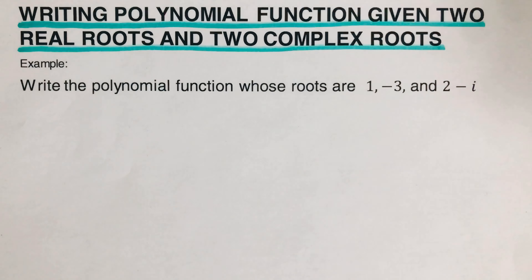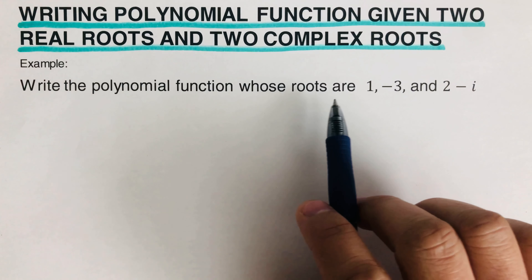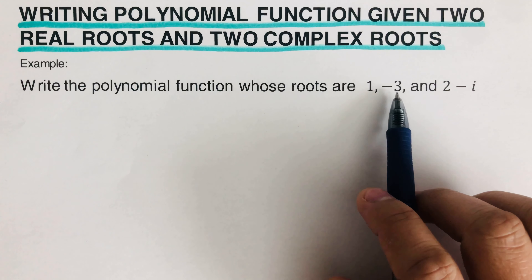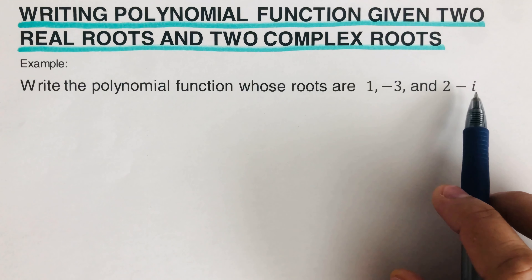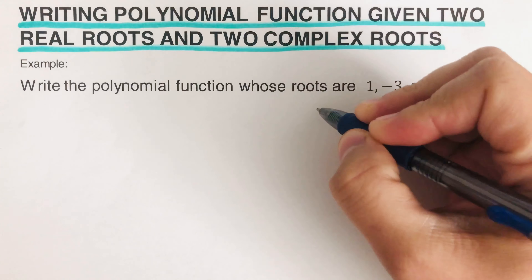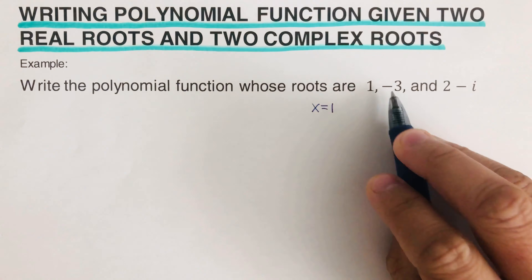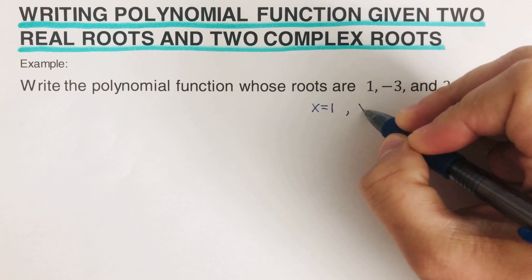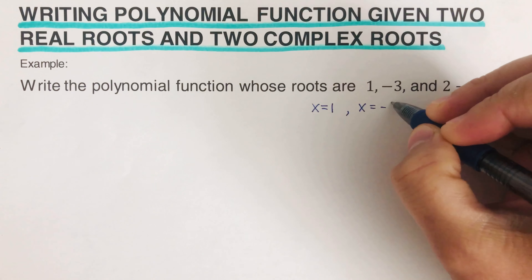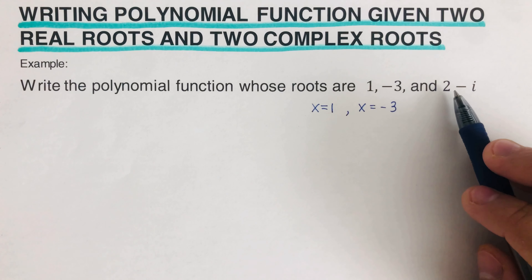Going back to our example, we are expected to write a polynomial function whose roots are 1, -3, and 2-i. Looking at these roots, we can rewrite them in notation form: x = 1, x = -3.